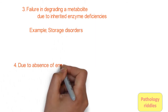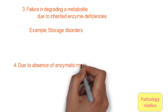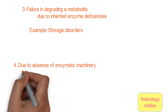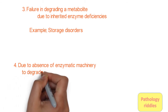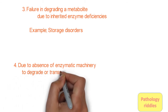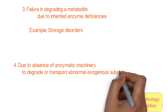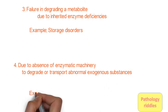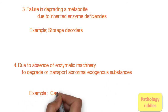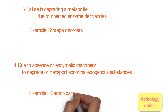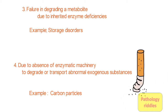Mechanism 4: Due to absence of enzymatic machinery to degrade or transport abnormal exogenous substances, these exogenous substances accumulate. For example, carbon particles. So there are 4 mechanisms in total.